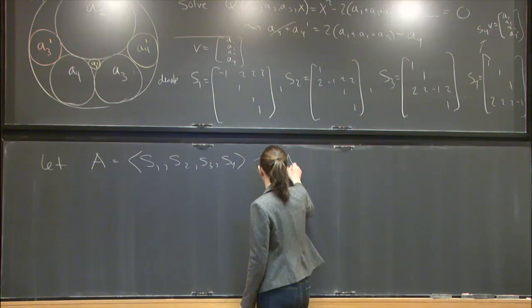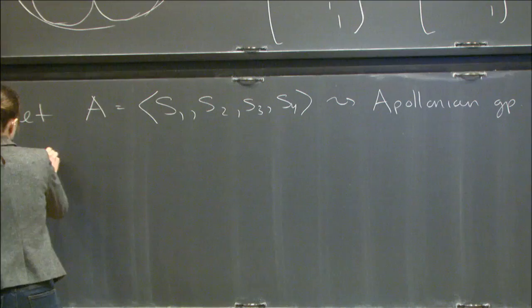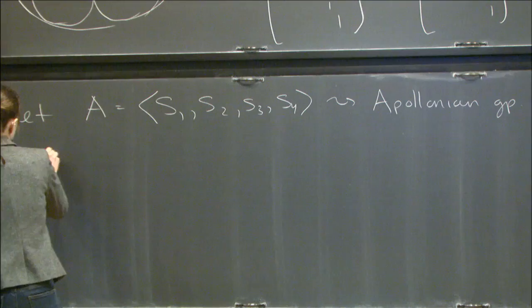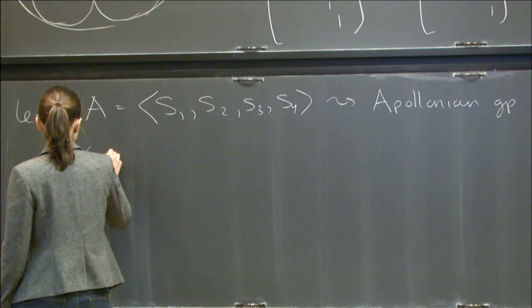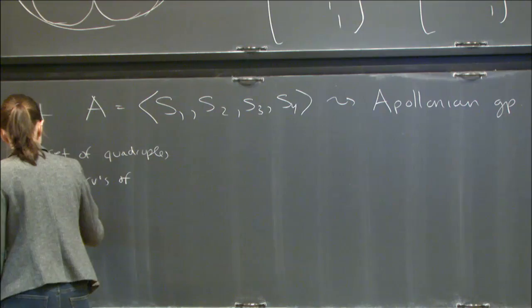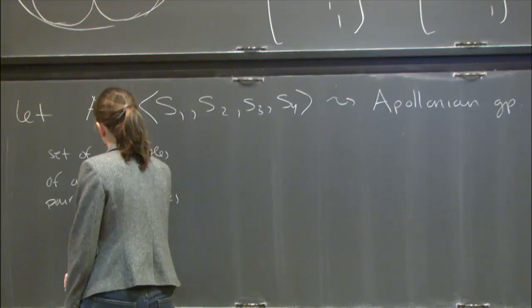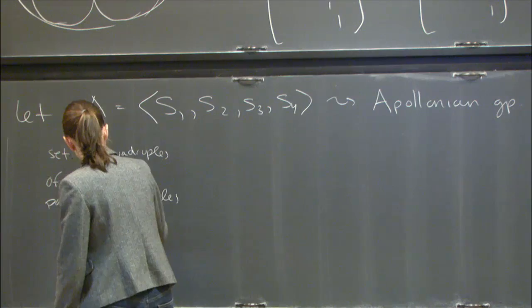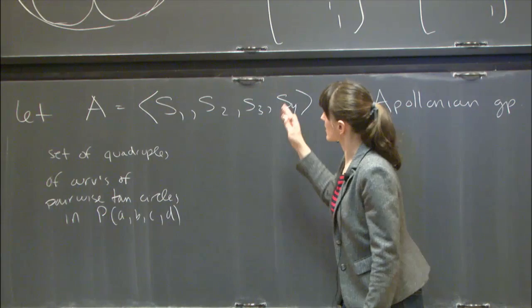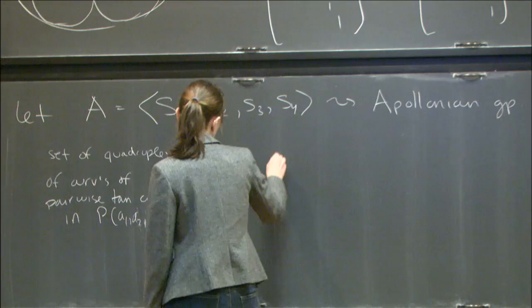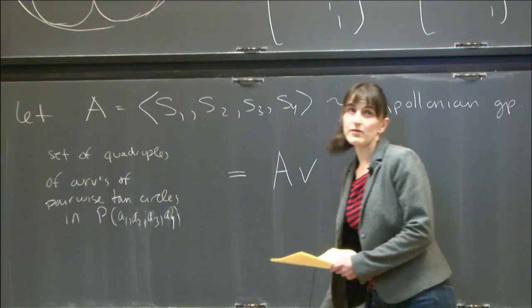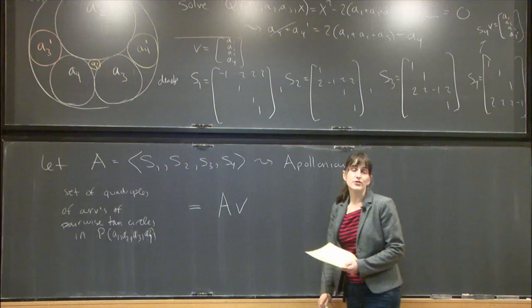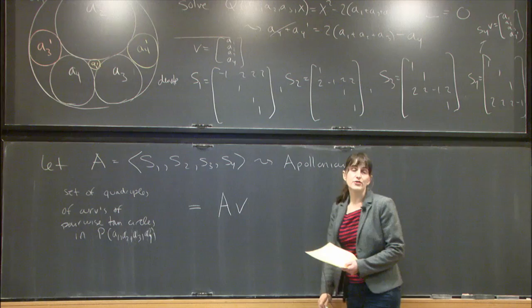I'll denote by A the group generated by S1, S2, S3, and S4 — this is called the Apollonian group. The observation is that the set of quadruples of curvatures of pairwise tangent circles in the packing P(A1,A2,A3,A4) is just the orbit of A acting on V.